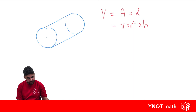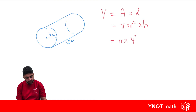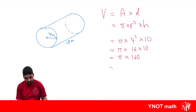Let's give some values to the cylinder. If we know the radius is 4 meters and the height is 10 meters, we should be able to find the volume. That's pi times the radius squared — where the radius is 4 — times the height, which is 10. This gives us pi times 16 times 10, which is pi times 160. Putting that in the calculator gives us 502.7 meters cubed to one decimal place.